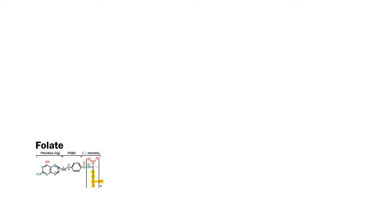This is folate, or the deprotonated form of folic acid, also known as vitamin B9. Folate is typically made by plants and fungi, and can be derived from a variety of foods. The structure includes this pteridine ring and para-aminobenzoic acid.